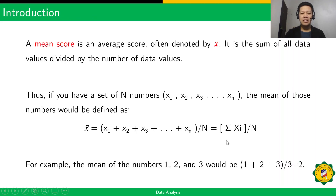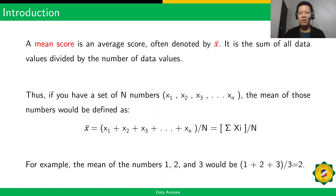A mean is an average score often denoted by x-bar. It is the sum of all data values divided by the number of data values. If you have a set of n numbers x sub 1, x sub 2, x sub 3, up to x sub n, the mean is defined as x-bar equals x sub 1 plus x sub 2 plus x sub 3 plus and so on plus x sub n, divided by n. Or it can be written as the summation of x sub i all over n.